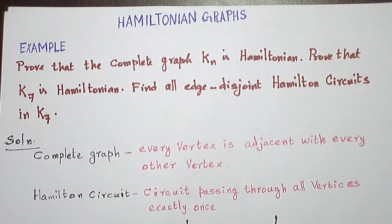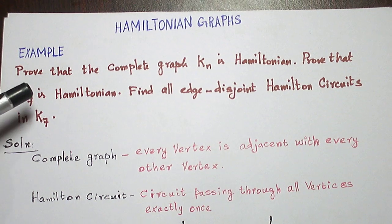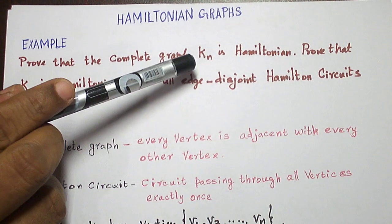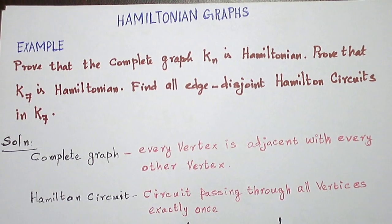Today let us see an example in the topic Hamiltonian graphs. This is an example. Every complete graph on N vertices is Hamiltonian. That is what we are asked to prove.